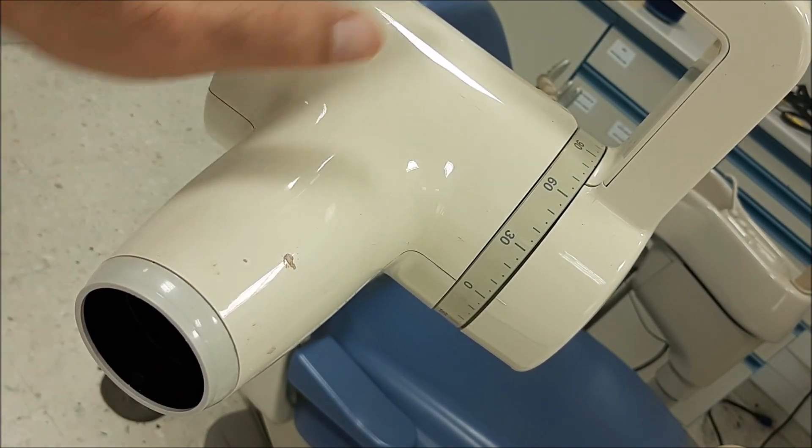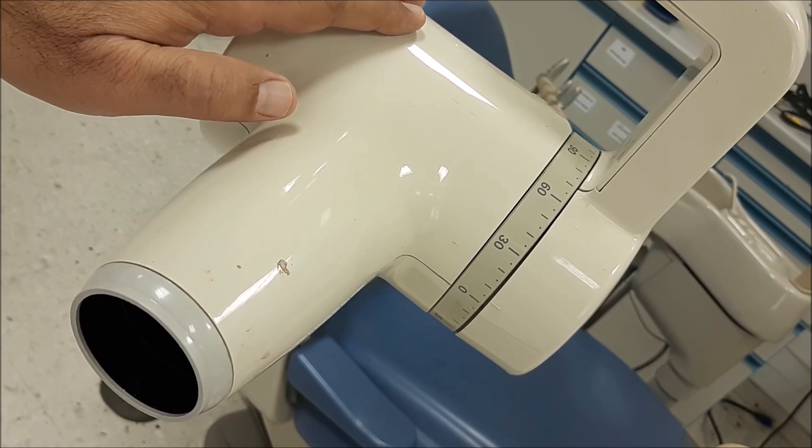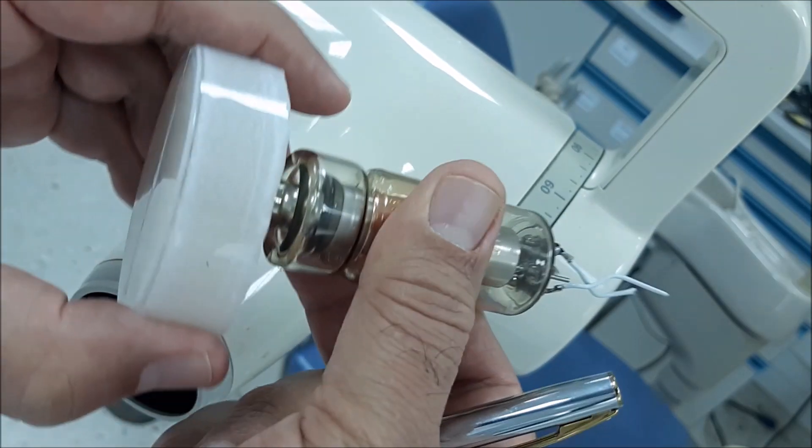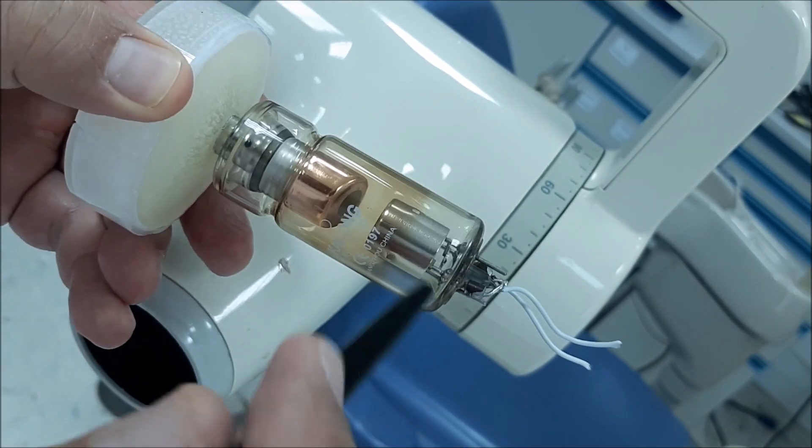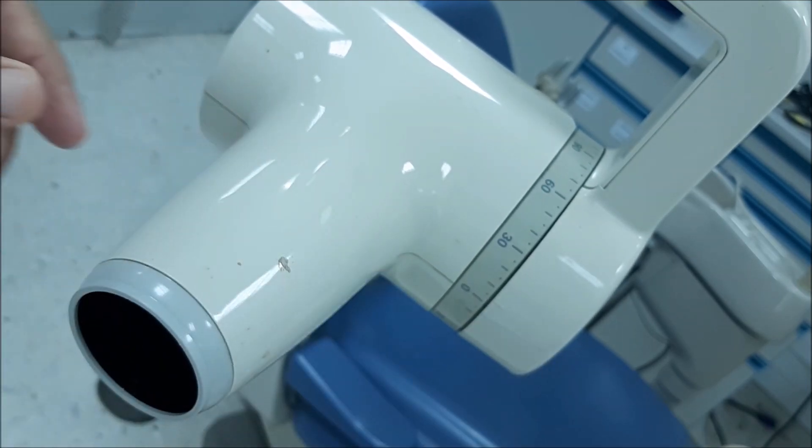Inside here there is a step-up transformer and a step-down transformer. The step-down transformer heats up the tungsten filament, while the step-up transformer creates potential difference between the cathode and the anode.